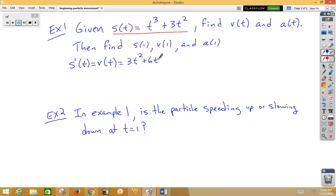We want a(t), which would be the second derivative of position or the derivative of velocity. So acceleration would be 6t + 6.